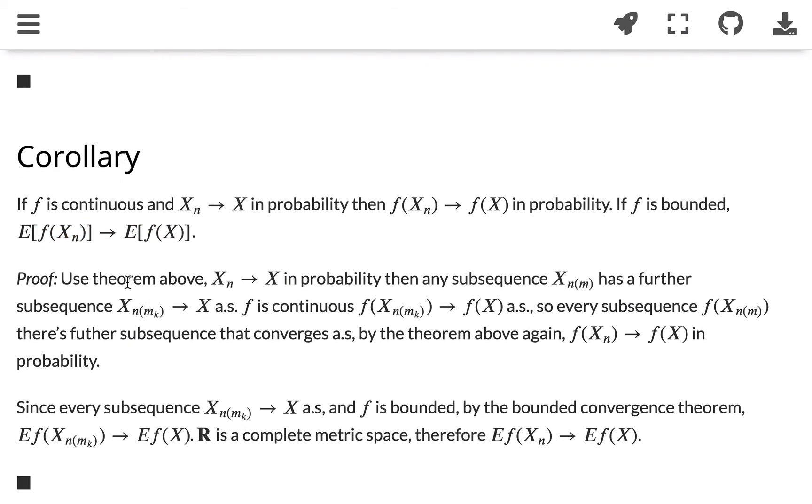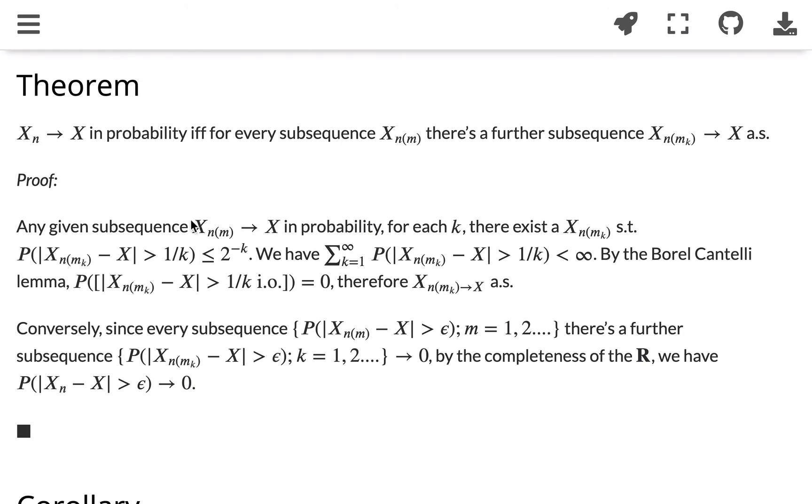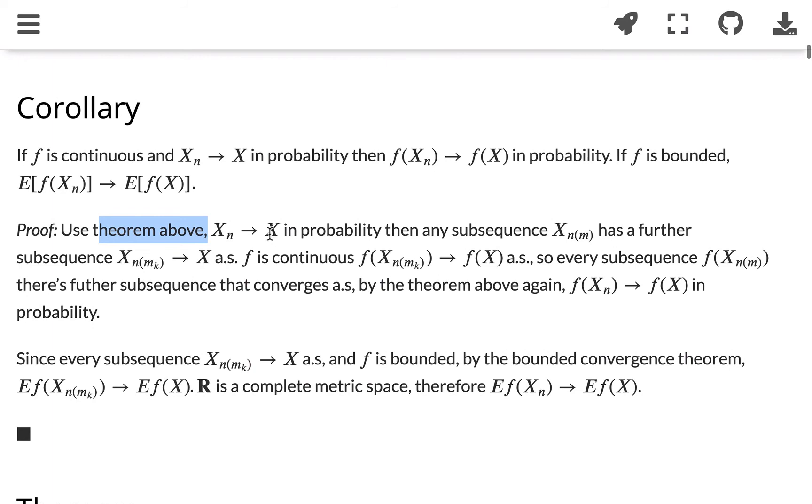So we're going to prove that. We're going to use the theorem above that we just saw. If x_n converged to x in probability, then any subsequence x_n_m has a further subsequence converged to x almost surely.